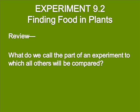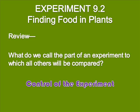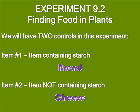Let's get started with Experiment 9.2. As a review, what do we call the part of an experiment to which all others will be compared? In this experiment, we're going to modify it somewhat from the book and have two controls. The first, which we'll call item 1, is an item containing starch — that item is bread. The second control, item 2, will be an item that we know does not contain starch, and I've chosen cheese for that.